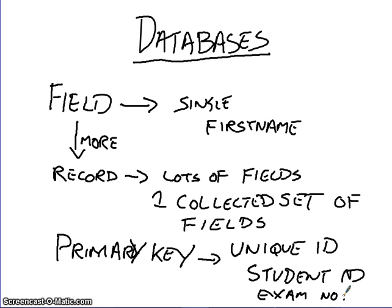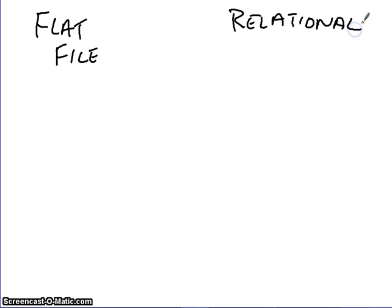Okay, so those are the main key terms that you have to know. You have to know the term field, record, primary key. When we put many records together, you end up with two of data. Now when we talk about databases, there are two main types of database. There are flat file, and there are relational.